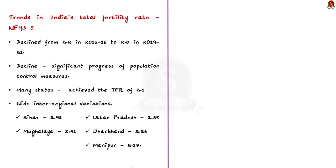India's total fertility rate has declined from 2.2 in 2015-16 to 2.0 in 2019-21. This trend was revealed by the report of the fifth round of the National Family Health Survey, released in May 2022. This decline indicates significant progress of population control measures taken by the government. As we know, a total fertility rate of 2.1 is considered the replacement level fertility at which population stability is achieved.